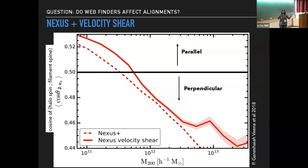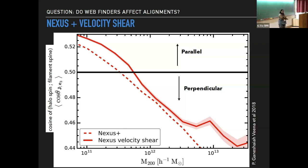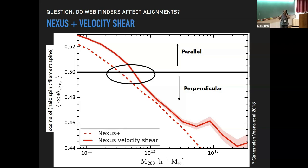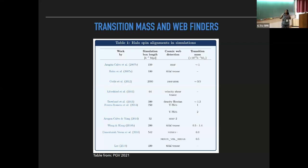The mass at which the transition happens from parallel to perpendicular alignment is known as the spin transition mass, and it's gaining a lot of attention. It changes when you use different filament finders — not for physical reasons, but because we're looking at different halo populations. More recently, papers have shown this spin transition mass is sensitive to the presence of neutrinos and different dark energy models because tidal torquing differs, making this a potentially important cosmological probe.